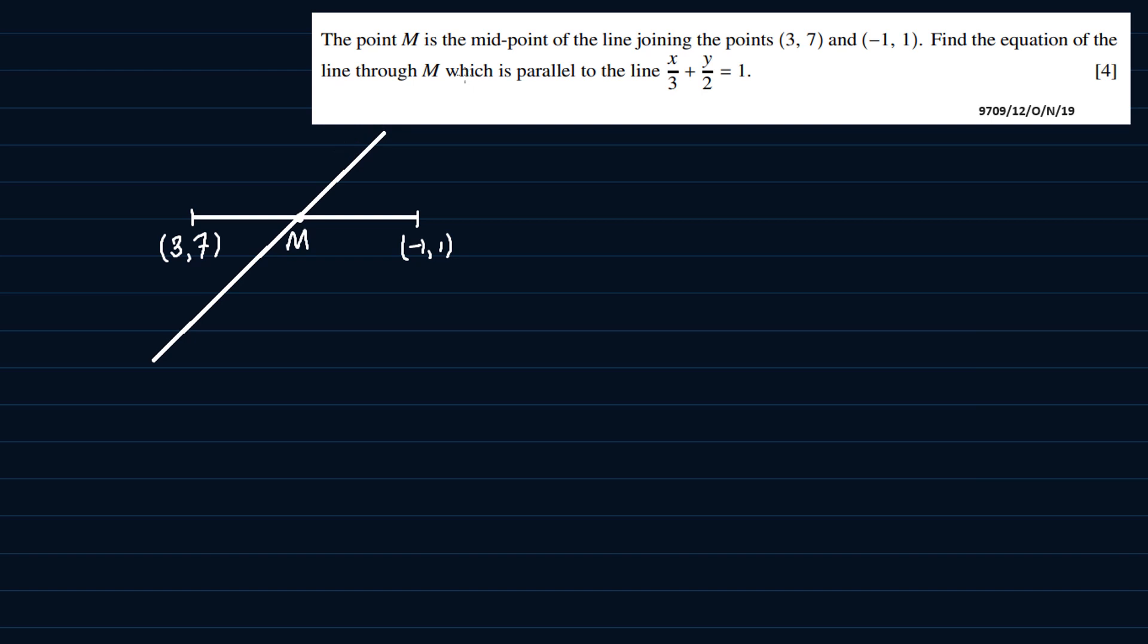According to the question, they're telling us that this line which passes through the midpoint M is parallel to another line with the equation x/3 + y/2 = 1. So I'll simply draw a line parallel to the line passing through the point M. So this is the line. And according to the question, the equation of the line is x/3 + y/2 = 1.